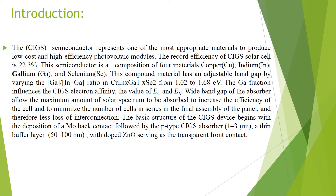This compound material has an adjustable band gap by varying the indium-gallium ratio in CIGS, ranging from 1.02 to 1.68 eV. The basic structure of the CIGS device begins with the deposition of a molybdenum back contact, followed by the P-type CIGS absorber, and a thin buffer layer with doped ZnO serving as the transparent front contact.